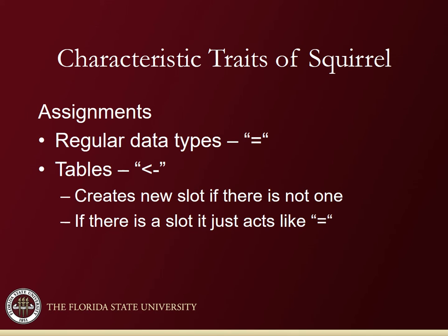Squirrel has two different assignment operators. The first is the regular assignment operator, which is the equal sign, used on regular data types to set one equal to the other. The second is called the new slot operator and is used to create a new slot in tables. If the table does not have a slot, it will create one; if it does, it will assign the value into that existing slot.